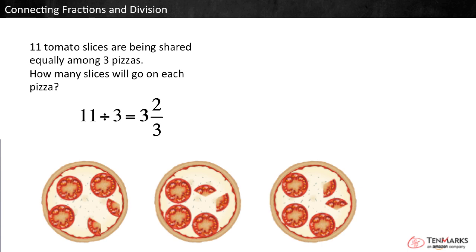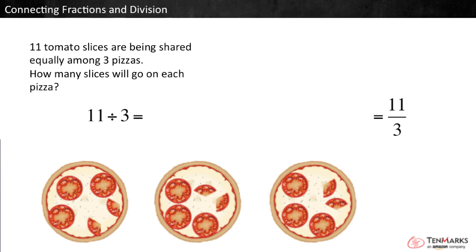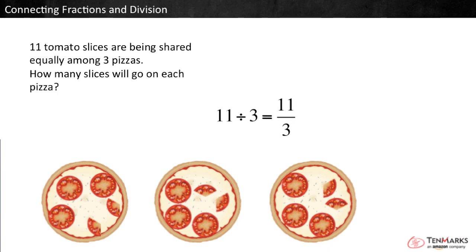Write 3 and 2 thirds as a fraction greater than 1. 3 and 2 thirds equals 3 thirds plus 3 thirds plus 3 thirds plus 2 thirds, which is 11 thirds. So 11 divided by 3 equals 11 thirds. If all the slices on the pizza were cut into thirds, there would be 11 thirds tomato slices on each pizza.